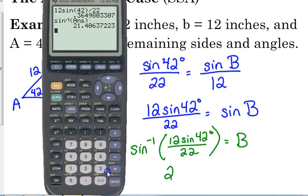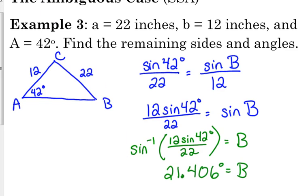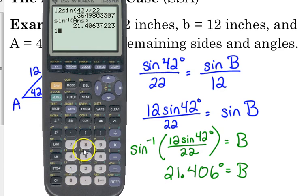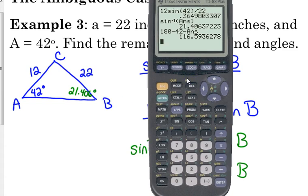So, that gives us that angle B is 21.406 degrees is angle B. And then we can subtract that and 42 from 180. So, we get 116.594 for angle C.